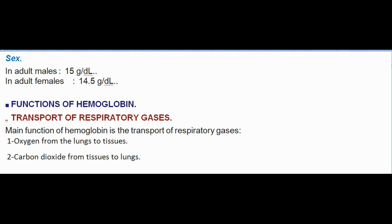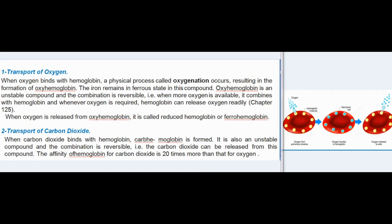Sex differences: in adult males 15 g/dL, in adult females 14.5 g/dL. Functions of hemoglobin — transport of respiratory gases: the main function of hemoglobin is transport of respiratory gases: (1) oxygen from lungs to tissues, (2) carbon dioxide from tissues to lungs. Transport of oxygen: when oxygen binds with hemoglobin, a physical process called oxygenation occurs.